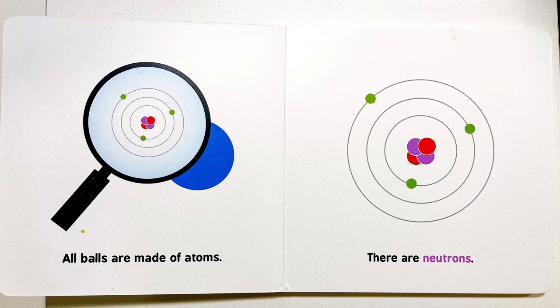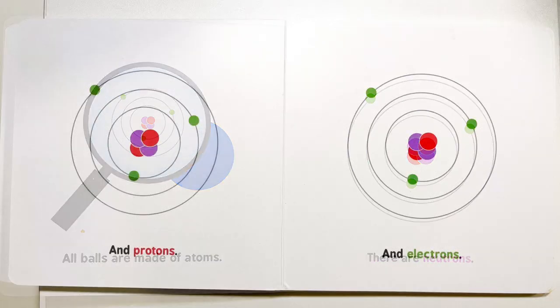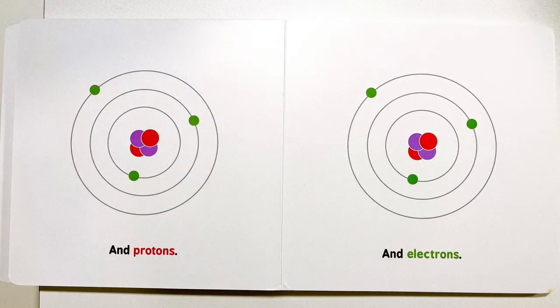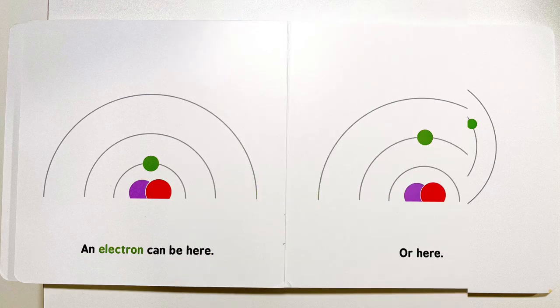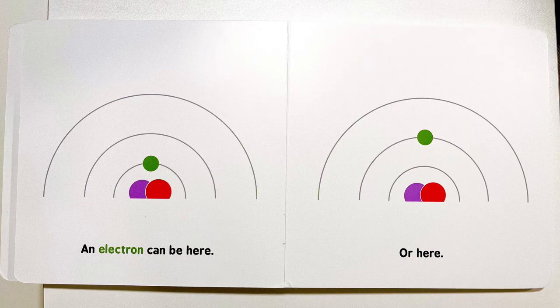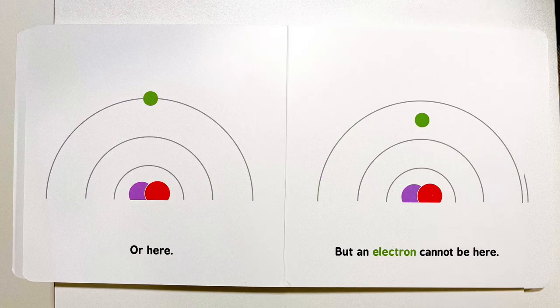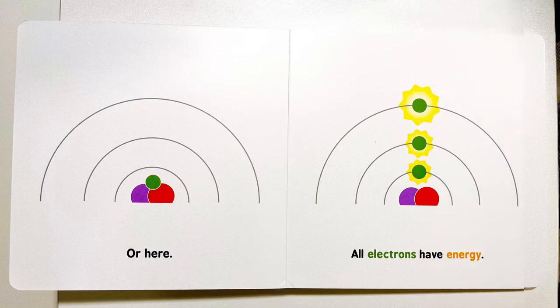All balls are made of atoms. There are neutrons and protons and electrons. An electron can be here or here or here. But an electron cannot be here or here.